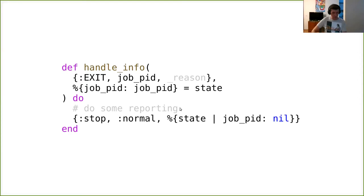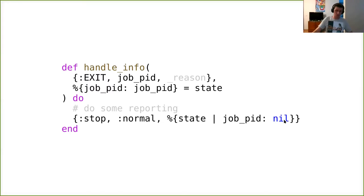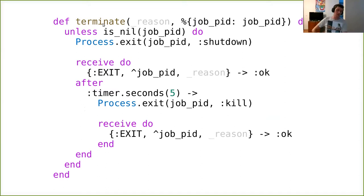I can do some reporting — send results to the end user — and then stop myself. This is specific to the query manager logic: the runner stopped, so the manager stops itself. The important thing is I set the PID to nil. More generally, when I handle the exit of my child, I remove it from my internal records because it is no longer my child. This is important for the next thing: I need to handle terminate by stopping my children.